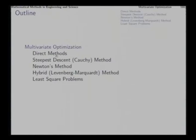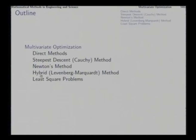Good morning. In the previous lecture on optimization, we studied the conceptual background of multivariate optimization. In this lecture, we will be studying some of the methods to solve optimization problems. Some of the methods are called direct methods, because they use only the function values and not derivatives. We will study one direct method first and then continue into the study of methods based on gradients, that is steepest descent, Newton's method, and hybrid method.